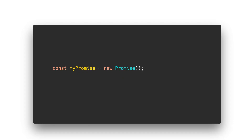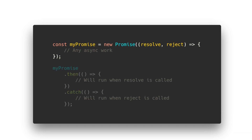We can create our own promises as well. Just like we created a Date object using the new keyword, we can also create promises using the new keyword. Into the constructor of this promise, we pass a function, and that function gets given two arguments — both of them are functions. One is to resolve the promise and the other is to reject the promise. We use resolve in the success case and reject in the failure case. We can then do whatever asynchronous work we need to inside this promise function, and the code inside the then or catch function will never run until we explicitly call resolve or reject.